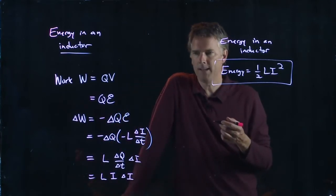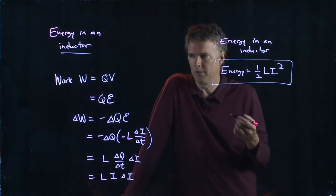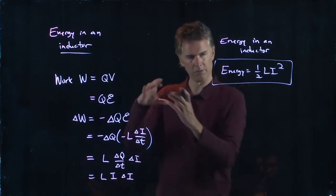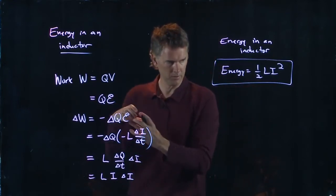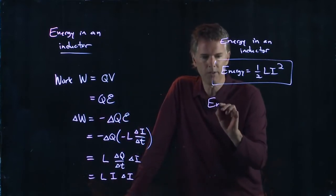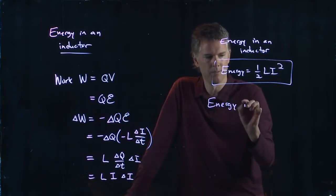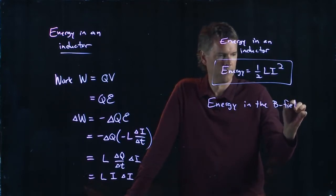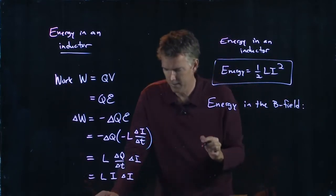But if you're generating energy in this inductor, there really must be energy in those B fields themselves. Because the B field in the center of the solenoid, which is really important for the inductor. And so the energy in the B field itself is the following.